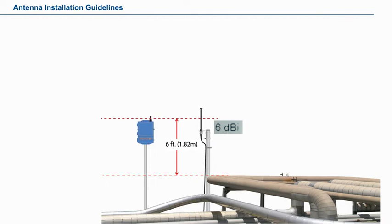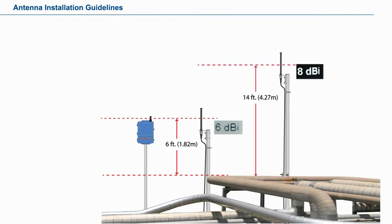The remote antenna with 8 dBi gain should be mounted at least 14 feet or 4.27 meters above structure.